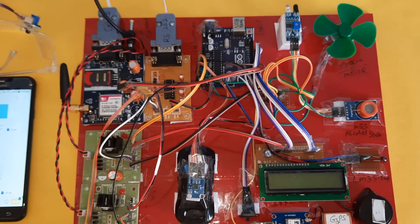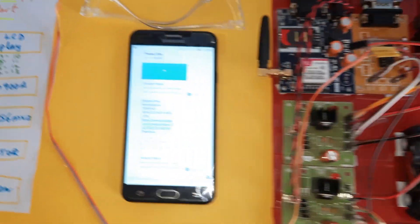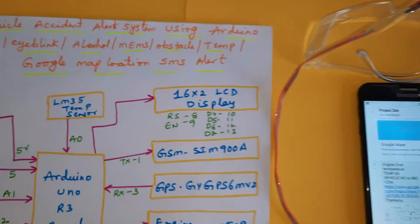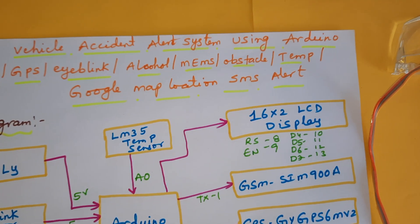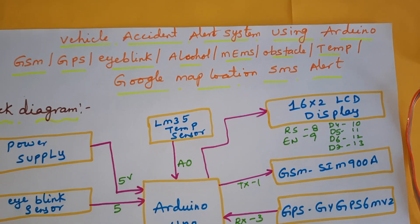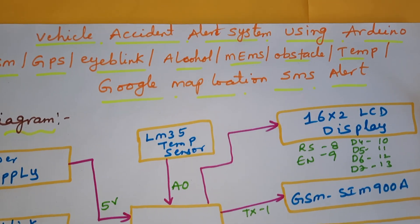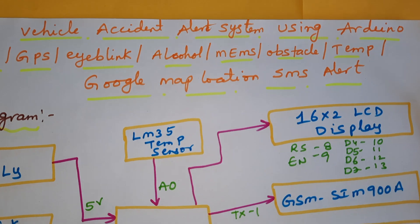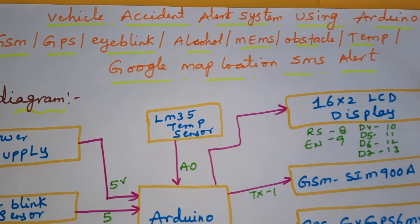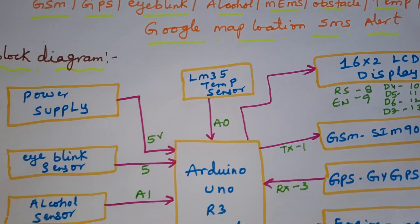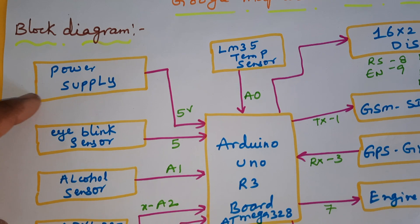Hi, we are from SVSM. The project title is Vehicle Accident Alert System using Arduino, GSM, GPS, eye blink, alcohol, MEMS, obstacle, and temperature sensors, with Google Map location and SMS alert.